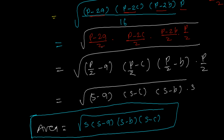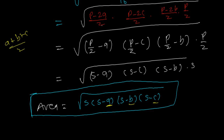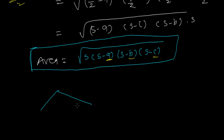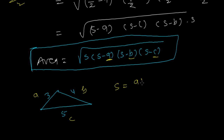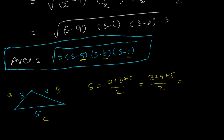Let's apply this with an example. Suppose we have a triangle with sides 3, 4, and 5, where a=3, b=4, c=5. First, find the semi-perimeter: s = (3+4+5)/2 = 12/2 = 6.